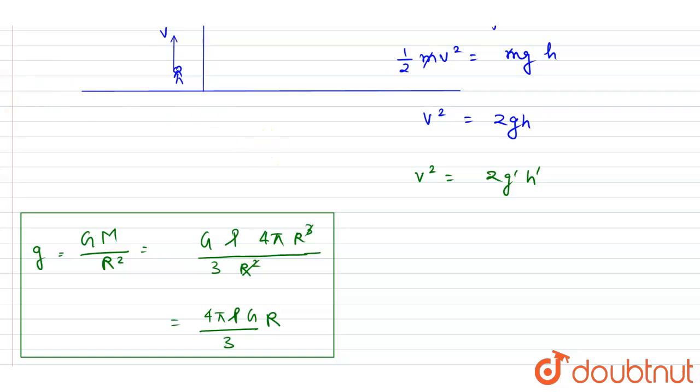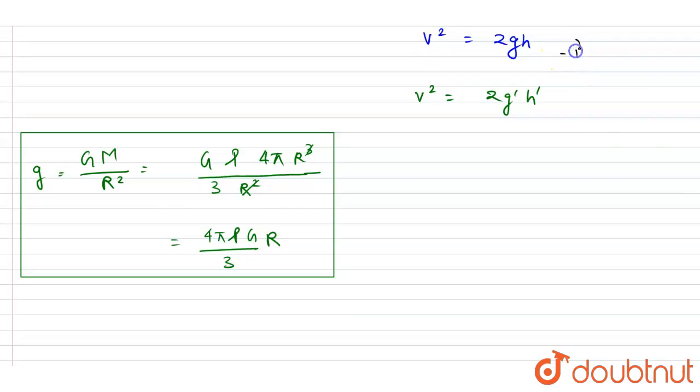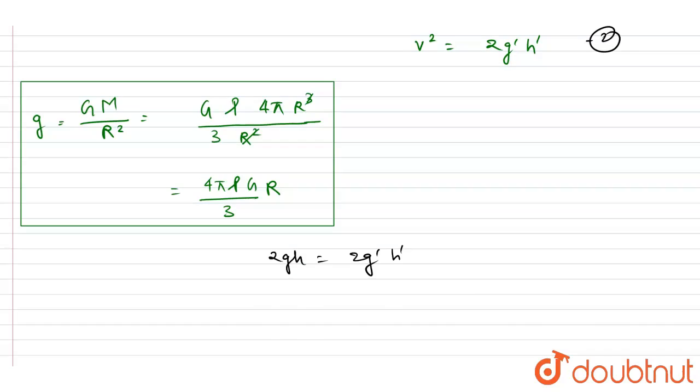Now if I equate the two equations, the initial velocity will be same. So 2gh equals 2g'h'. We want h', so h' equals g by g' into h.